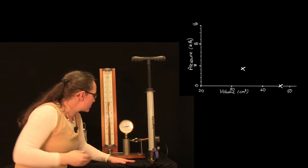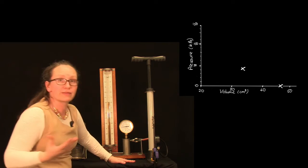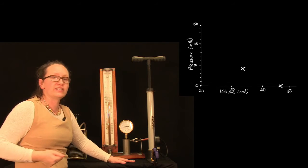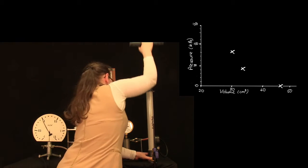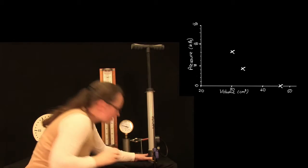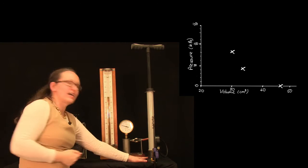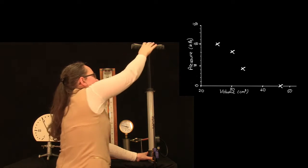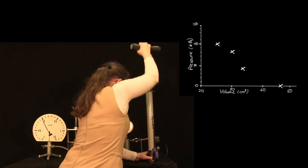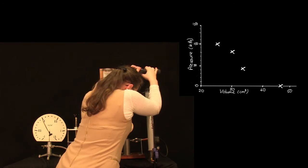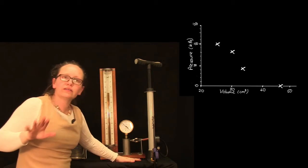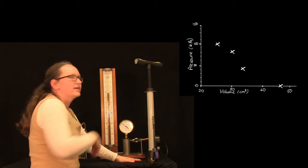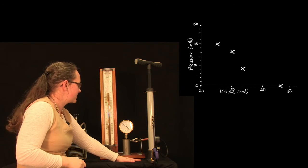We've increased the pressure again. So now it's around about 60 kilopascals, and the volume of air is 30 centimeters cubed. Pressure is now approximately 100 kilopascals, and the volume of air has gone down to 25 centimeters cubed. We're now at about 130 kilopascals, and the volume of air is about 21 centimeters cubed.